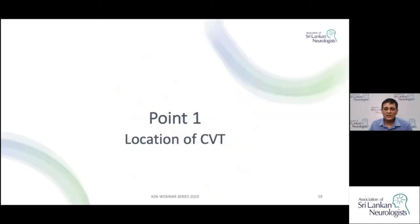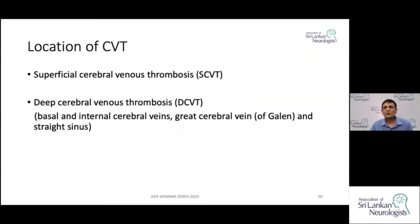Since this lecture is based on ten points, we will start with the first point: the location of venous thrombosis. You can divide this into two main groups — superficial and deep. The superficial cerebral venous thrombosis involves the superficial veins, while deep cerebral venous thrombosis involves the basal veins, the internal cerebral veins, the vein of Galen, and the straight sinuses.